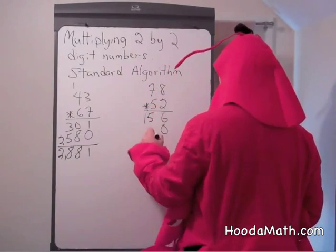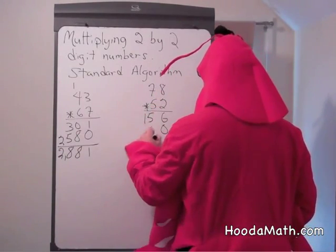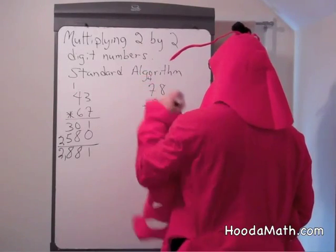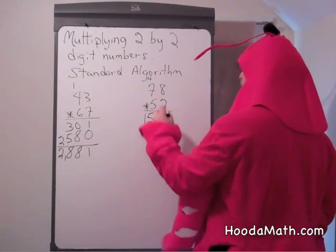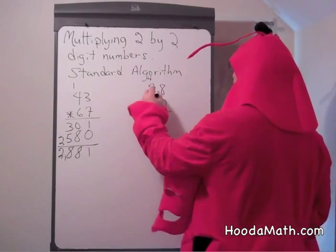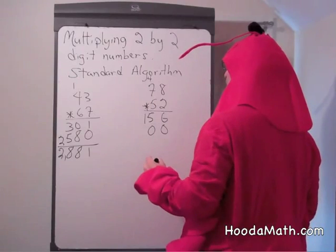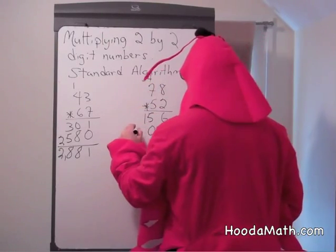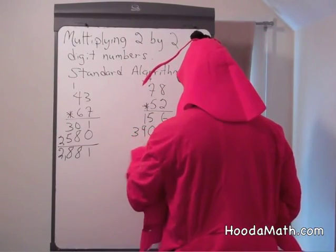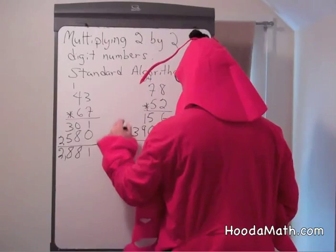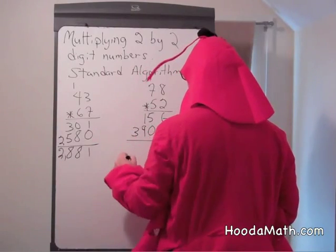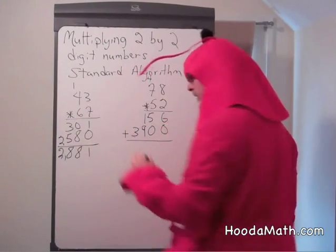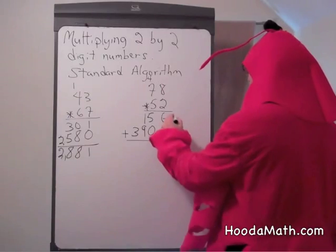5 times 8 is 40. Bring up the 4 and regroup. 5 times 7 is 35, plus 4 is 39. Now we add the partial products. You can put an addition sign if you'd like.